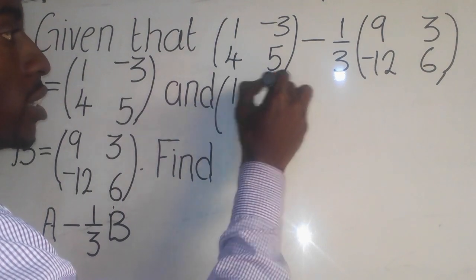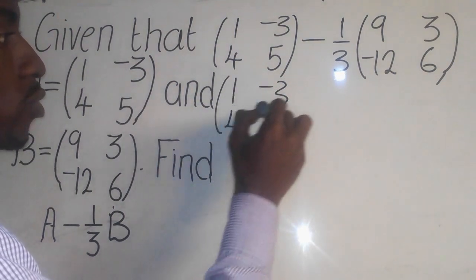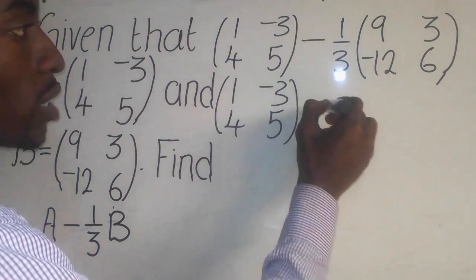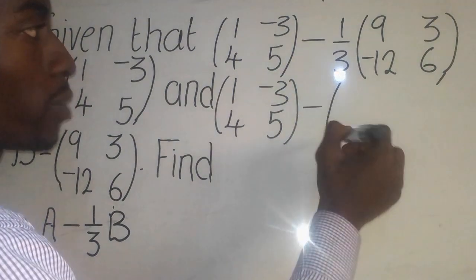1, here 1, negative 3, we have 4 and 5 there. So we say minus, we come down here. We say open now.